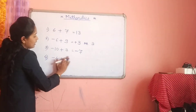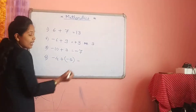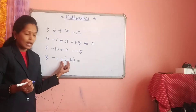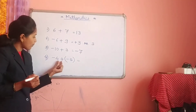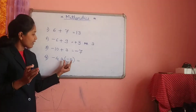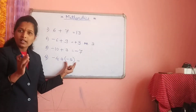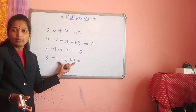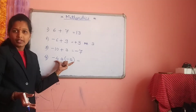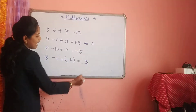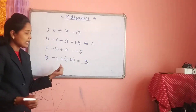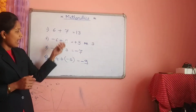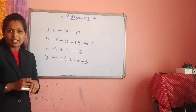And last: minus 4 plus minus 5. We take a bracket for minus 5 because both signs — positive and negative — we cannot write together. So one number is negative and another number is also negative. When both numbers are negative, we do the addition: 4 plus 5 is 9. Their common sign is negative, so your answer also has a negative sign. These are the things we learned in 6th standard — addition and subtraction of integers.